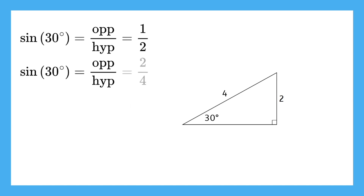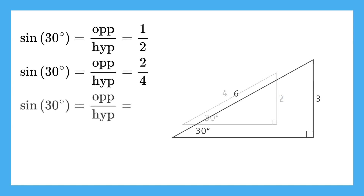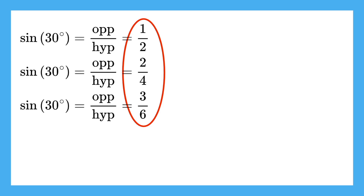For this larger triangle, we get 2 over 4. Now, what about another similar triangle with side lengths of 3 times the original? This ratio is 3 over 6. You may notice something about all of these fractions — they simplify to be 1 over 2. Any time we calculate the sine of a 30 degree angle, we get 1 over 2.